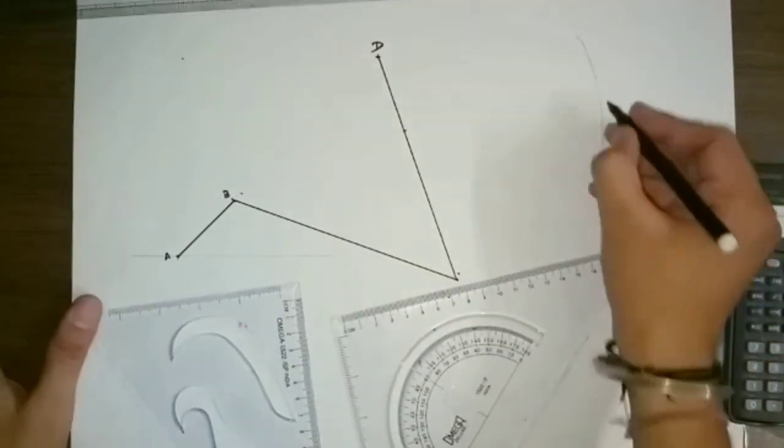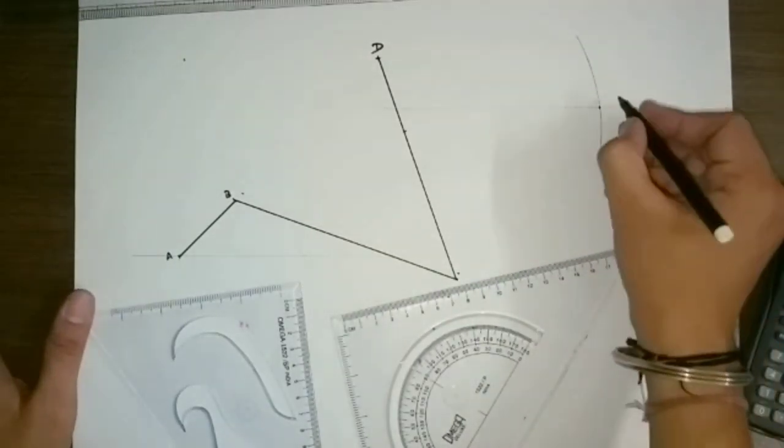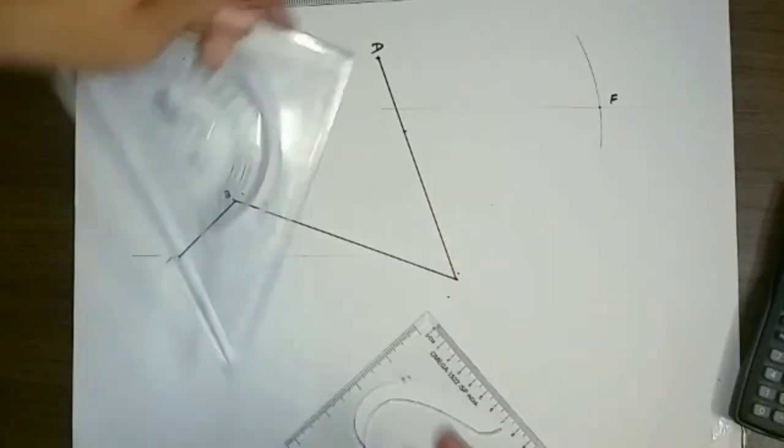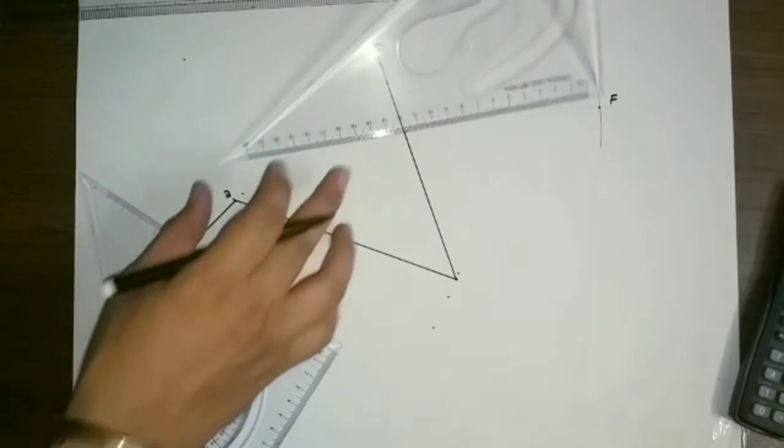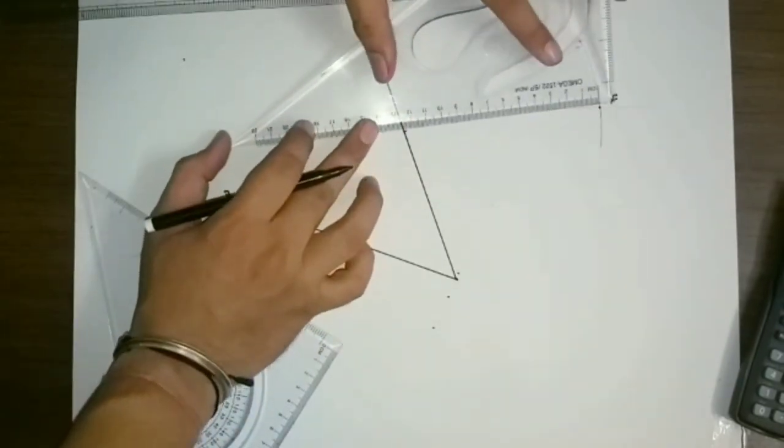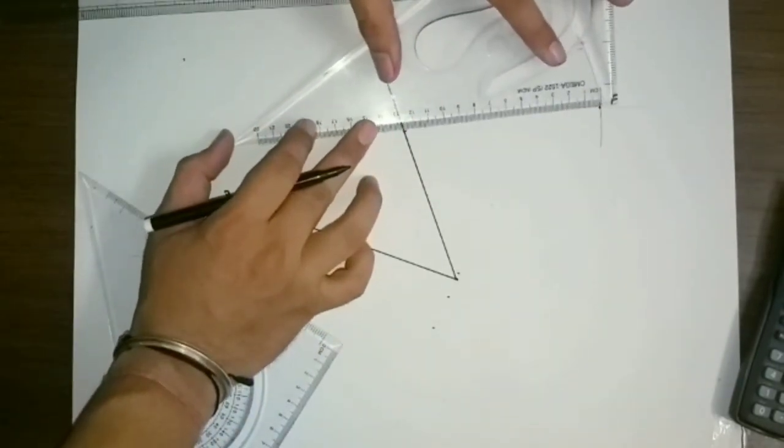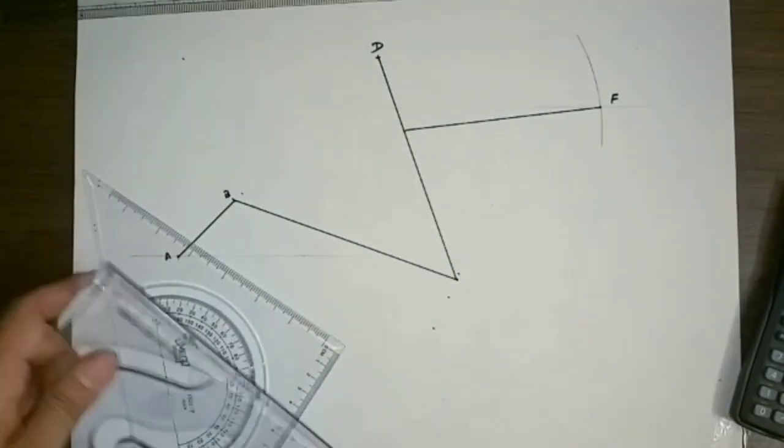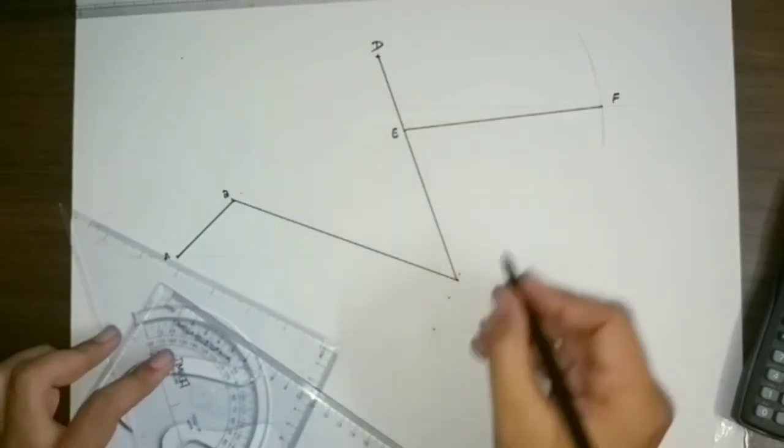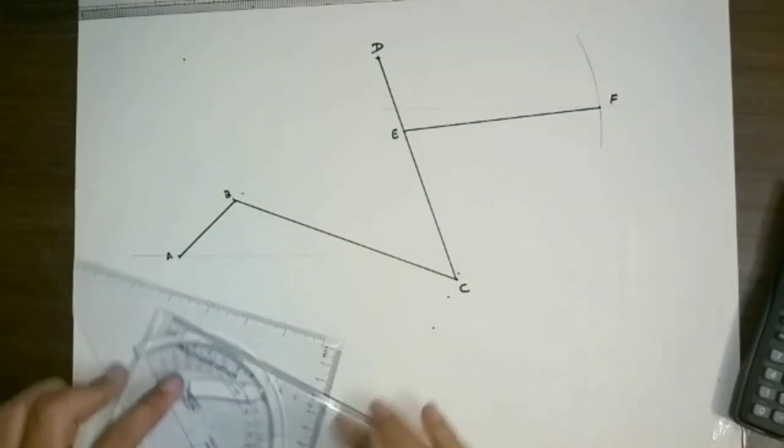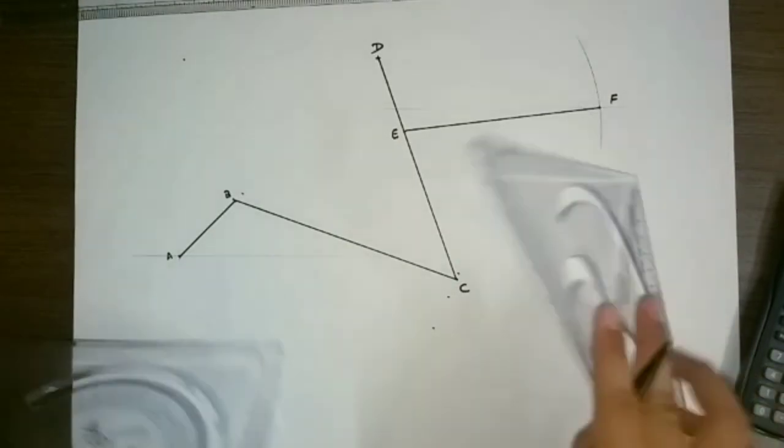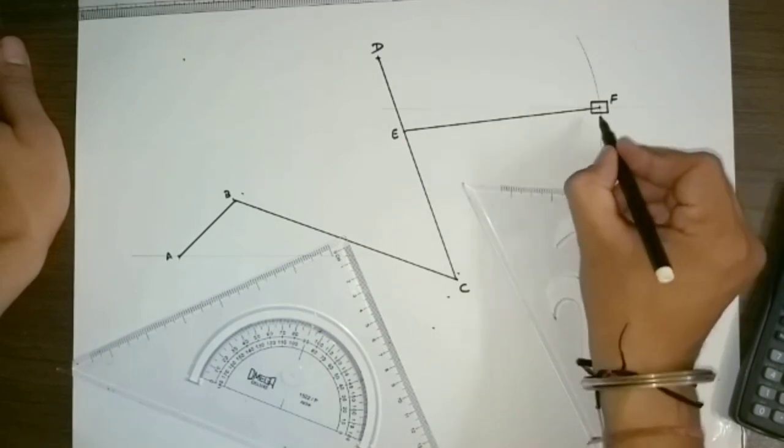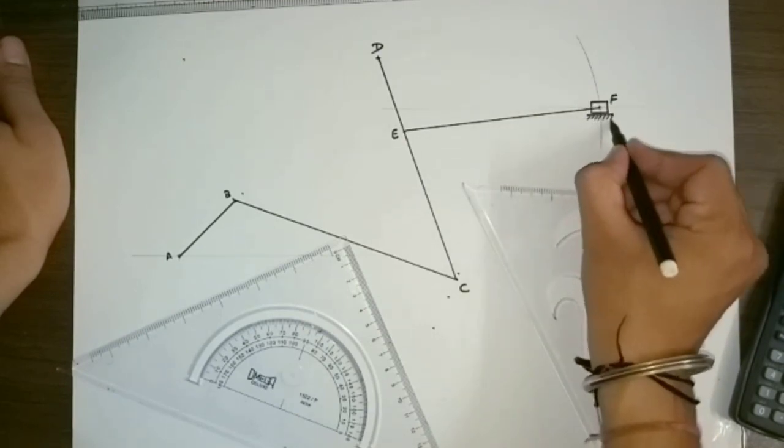Finally this is point F. I will join the line EF. That EF is 375 mm, so I will join this line. This is point E, this is point C, and at point F I will make a slider and ground. Thank you.